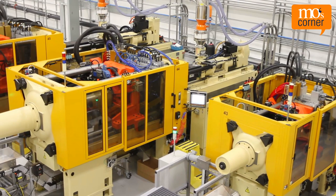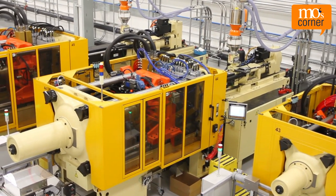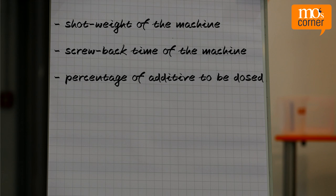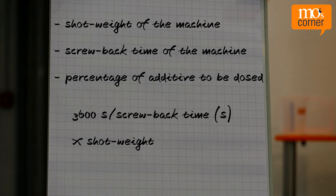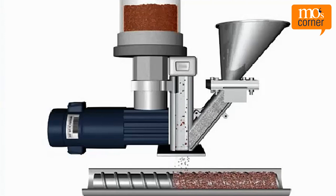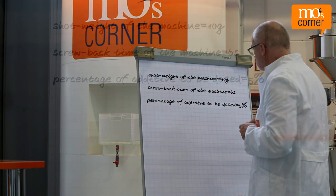In order to calculate the necessary throughput of a dosing machine, the following things must be considered: the shot weight of the machine, the screw back time of the machine, and the percentage of additive to be dosed. The required throughput of the dosing system is calculated as: 3600 seconds divided by the screw back time in seconds, times the shot weight. Only then can the throughput of the dosing station for the additive be determined — by multiplying the entire throughput during intake by the additive percentage.